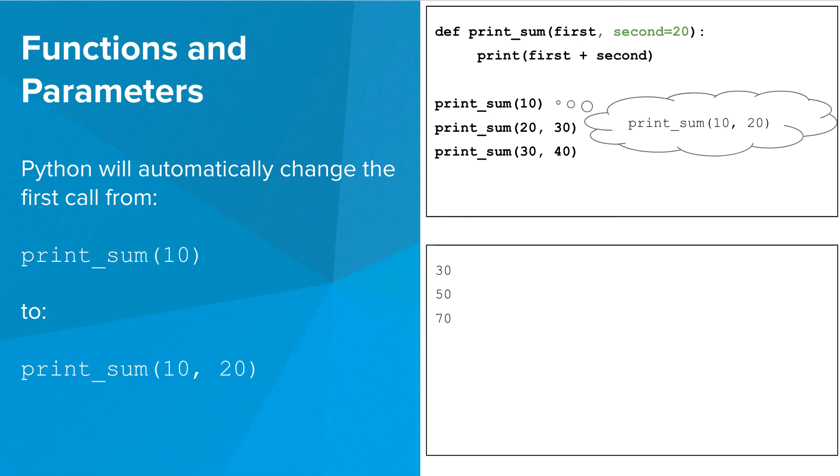In other words, Python will automatically change the first call from print_sum 10 to print_sum 10 comma 20. And when we call that 10 comma 20, and notice that it prints out 30.